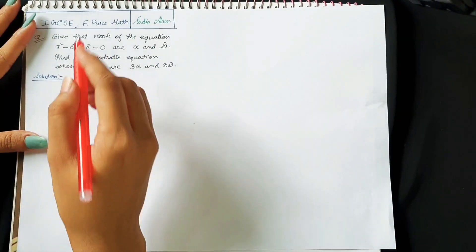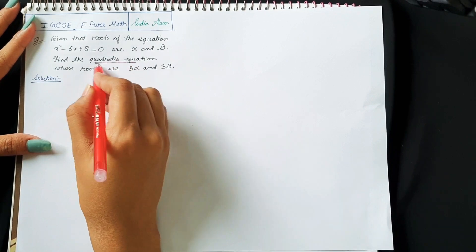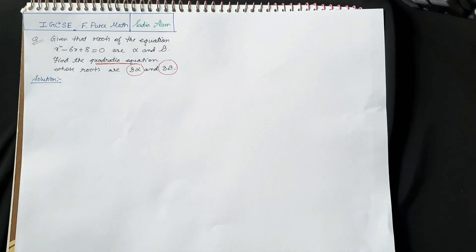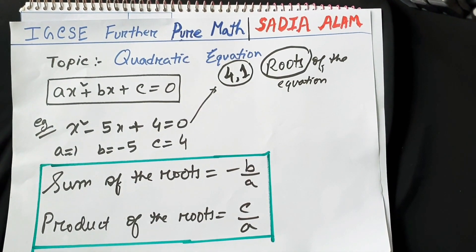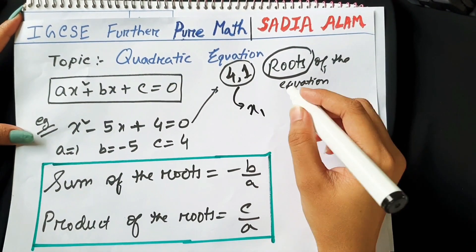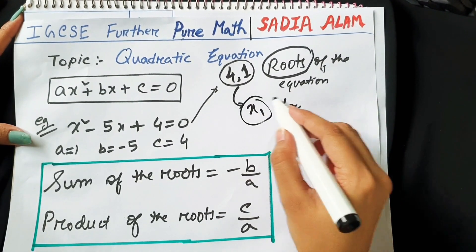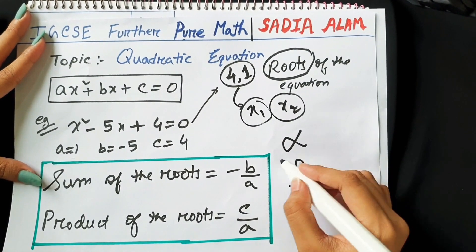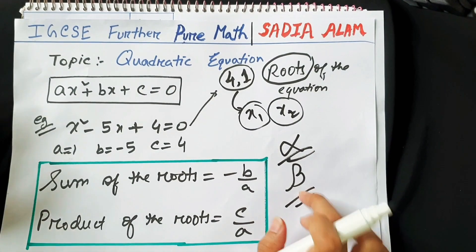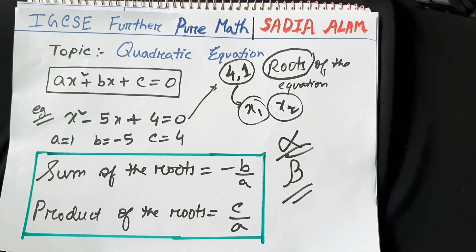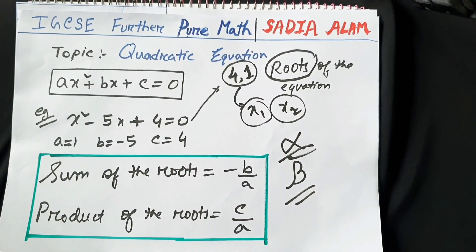Let's see an example where we need to find a quadratic equation whose roots are 3α and 3β. What are alpha and beta? Usually after solving a middle term equation we get two values of x, which can be represented as x₁ and x₂. Instead of using x₁ and x₂, we use alpha and beta — one root is alpha and the other root is beta, representing the roots of any equation.